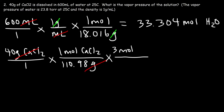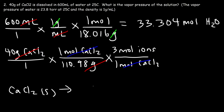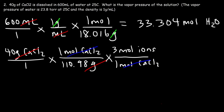When dealing with an ionic compound, you need to calculate the total moles of ions in solution, not just the moles of formula units. Calcium chloride, when it dissolves, breaks up into one calcium ion and two chloride ions — that's three ions total (1 + 2 = 3). The vapor pressure of the solution depends on the total number of solute particles. So: 40 divided by 110.98, multiplied by 3, gives us 1.081 moles of ions.